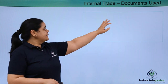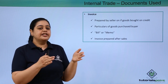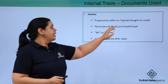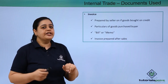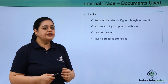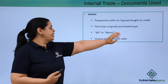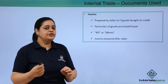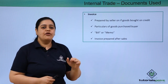The second document is the invoice. We learned about the performa invoice — now let's see what the actual invoice is. This is prepared only when the goods are bought on credit. Once the goods are bought on credit, we send this to the customer, that is the buyer, and write down the particulars of the goods which have been sold.